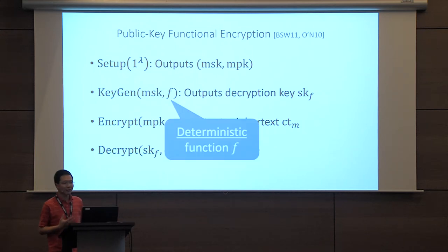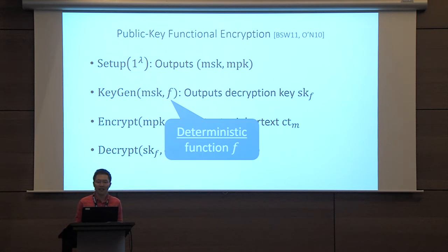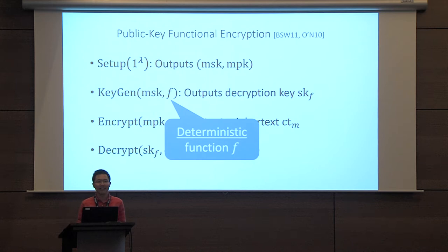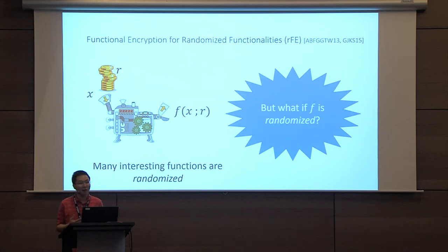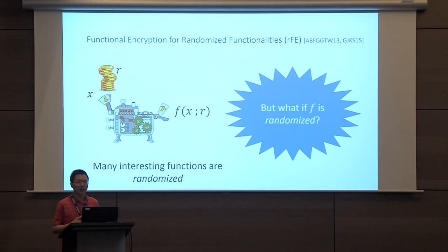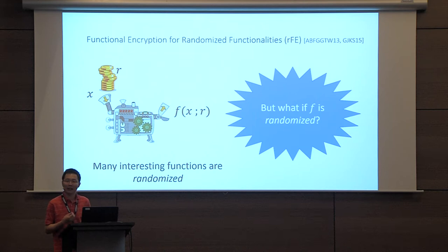In most existing works on functional encryption, we have considered deterministic functionalities — namely, the inputs to the key generation algorithm are descriptions of deterministic functions. However, not all functions are deterministic. There are many natural examples of randomized functions, and we may want to define a functional encryption scheme where we can give out keys for randomized functionalities.